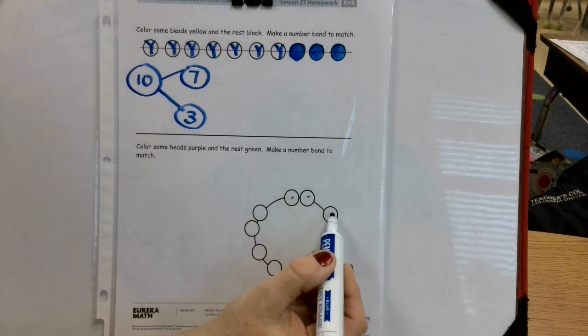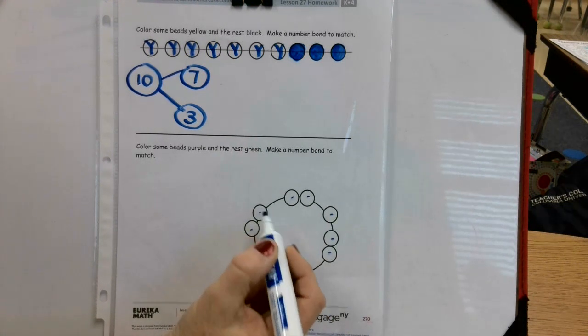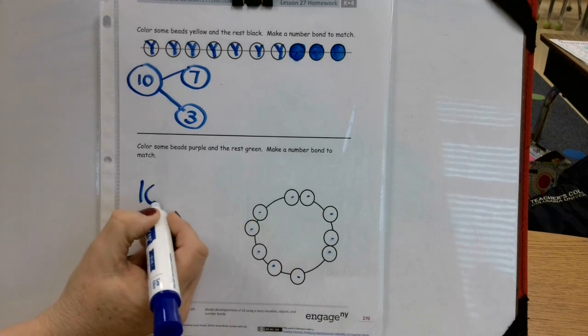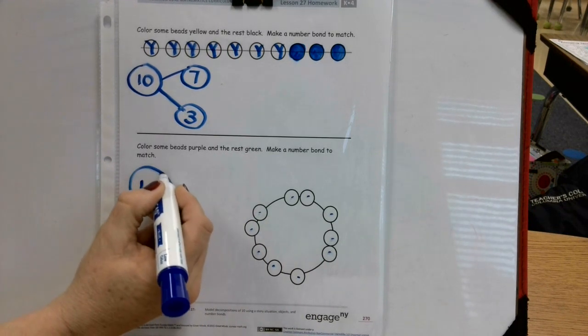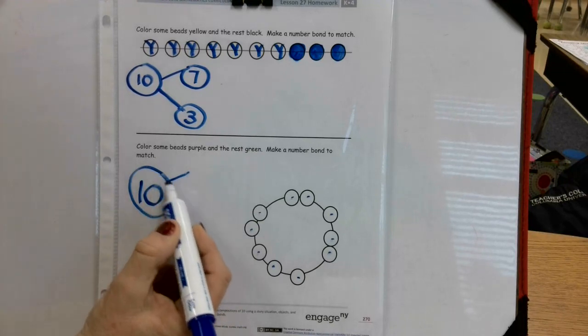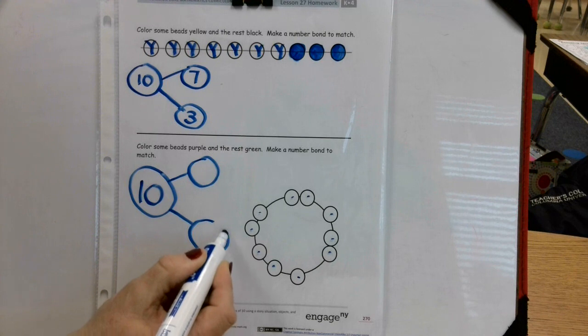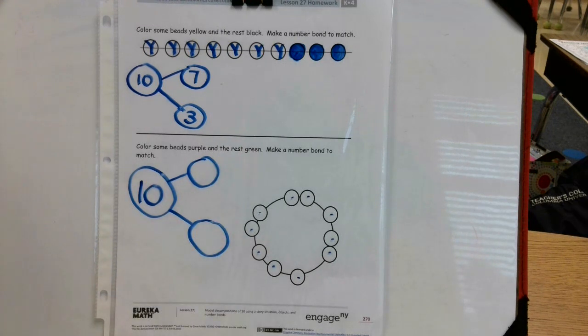One, two, three, four, five, six, seven, eight, nine, ten. So your whole part is ten, and then you're going to have a part and a part. Okay, see if you can do a different one than we did. We can't wait to see your answers. Have a great day.